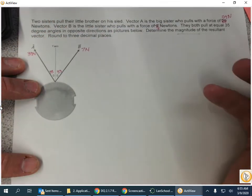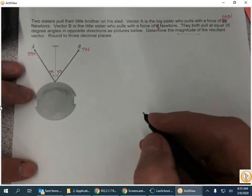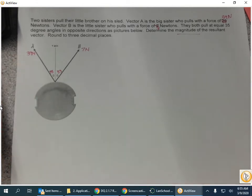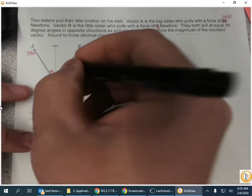And it says determine the magnitude of the resultant vector. Well, to do that, what we have to do is we have to look at the component vectors.